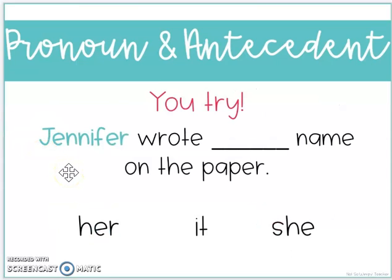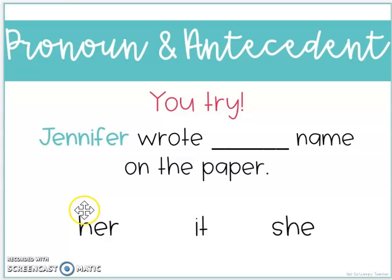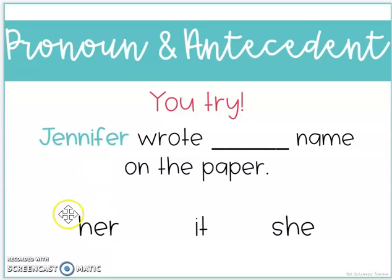So now we're going to try. Jennifer wrote blank name on the paper. Jennifer wrote her name, it name, she name — which one would make sense? Her. Jennifer wrote her name on the paper.